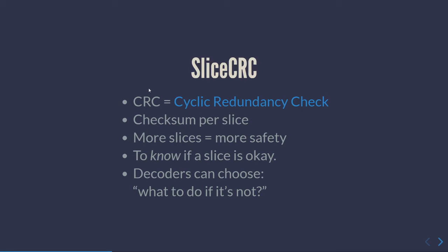If something breaks in a slice, you only have to deal with that part of an image — the smaller the slices, the smaller the impacted area. CRCs are not for repairing errors; the first thing they do is tell you if it's okay or not. In previous versions of FFV1 before version 3 there was no slice CRC, so the decoder would just crash when the bitstream was broken without knowing there was a problem.